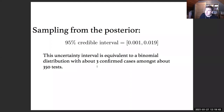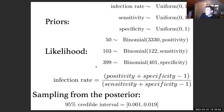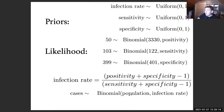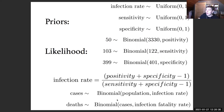We can extend this Bayesian model further: if we wanted to estimate the number of cases in the community, we model that as binomial with the population size and infection rate. And if we have the number of deaths in the community, we can then infer the infection fatality rate — with all uncertainty propagated through to the final estimate.